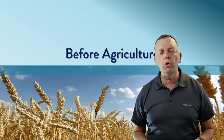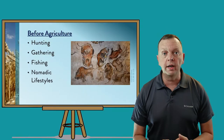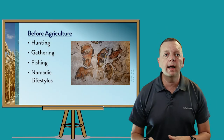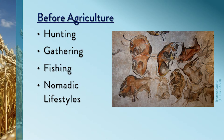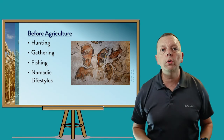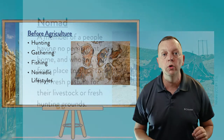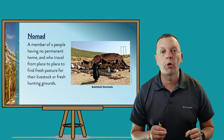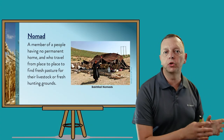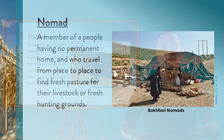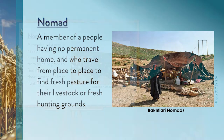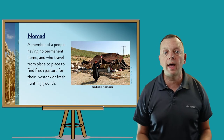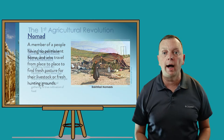We haven't always had agriculture. Before we had agriculture, how we got our food was through hunting, gathering, and fishing. And because our prey would move, or we had to move to different areas in order to find different food, this meant that all humans had what is known as a nomadic lifestyle. A nomad is a member of a group that has no permanent home. Instead, they have to travel from place to place to find new hunting grounds, food to eat, as well as pastures so that they could feed their livestock.